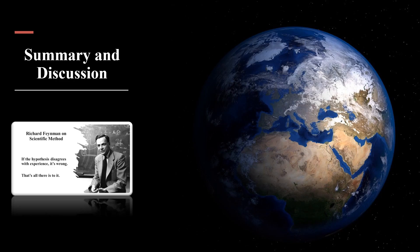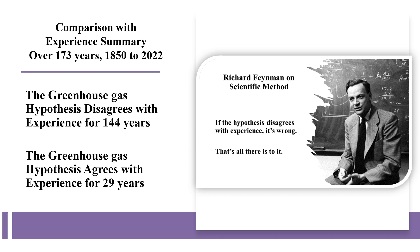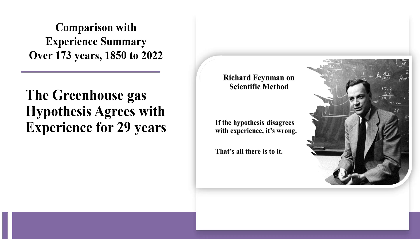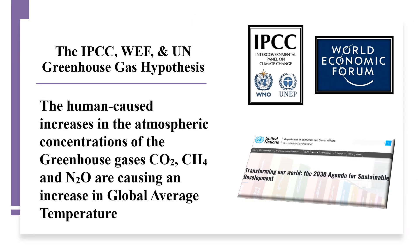We can first summarize the results of our comparison with experience. Over the 173 years of modern record keeping — 1850 to 2022 — the greenhouse gas hypothesis disagrees with experience for 144 years, but agrees with experience for 29 years. Does the greenhouse gas hypothesis fail the sanity check and therefore cannot possibly be true? No, it is not conclusive. The greenhouse gas hypothesis agrees with experience for 29 years, which is a mere 16.76% of the 173 years since 1850. But nevertheless, the greenhouse gases could still be causing an increasing global average temperature.